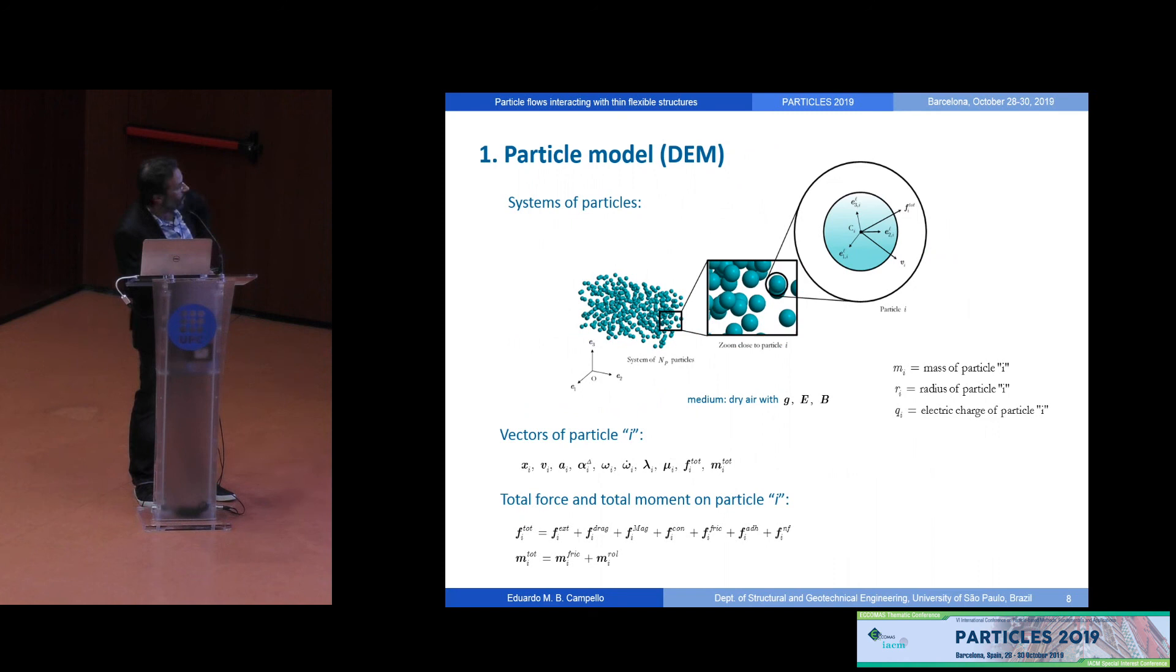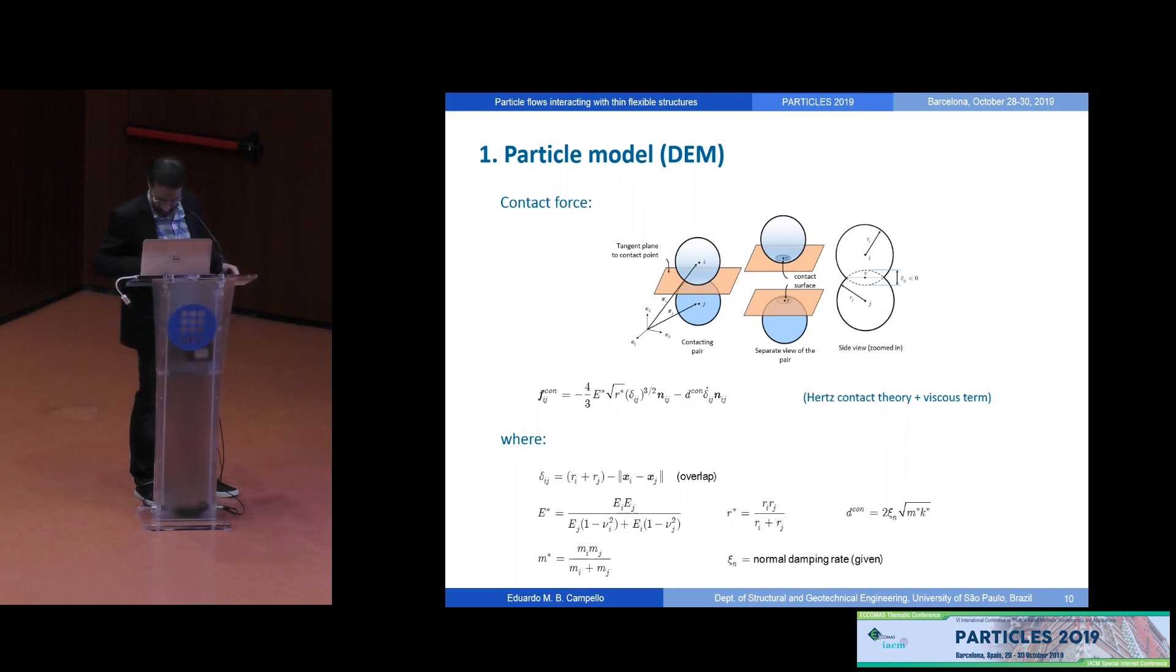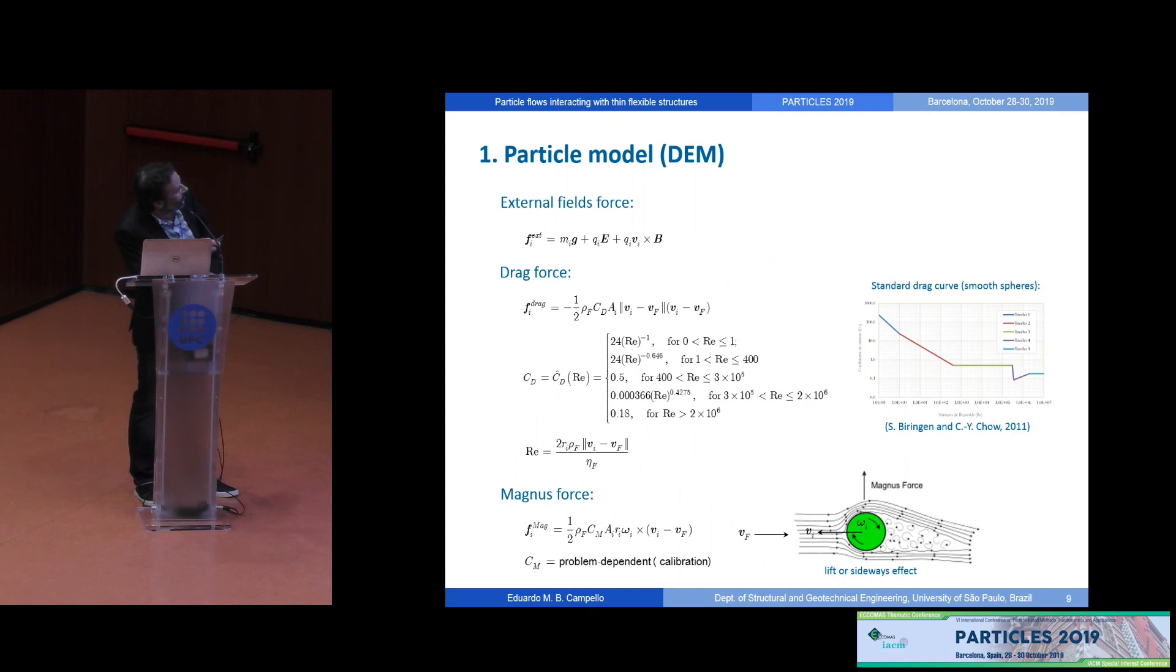So, now looking at the system of particles, we have those previous equations holding for every single particle here and then these particles interact with each other in the surrounding medium. The medium is supposed to have like an external gravity field, external electric field and occasionally the magnetic field as well and these forces are given through several contributions as shown here. There are the external field's forces, drag forces from the surrounding air, especially relevant if the particles travel at high speeds. We have magnus forces, relevant if the particles have high spin. We have contact forces, of course, friction forces, adhesion forces and occasionally near field interactions. For the moment, we have only friction forces and contributions from rolling resistance since we are dealing with spherical particles. So, let me show very quickly each one of these force contributions. Everyone is pretty much used to this.